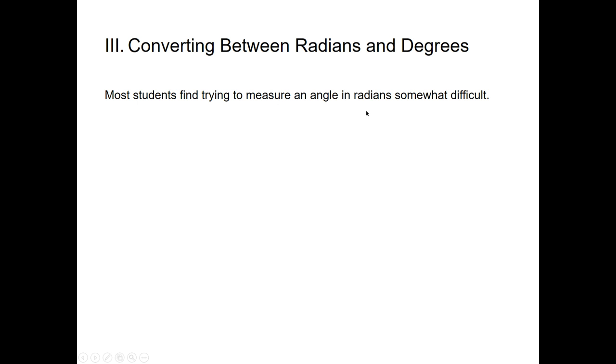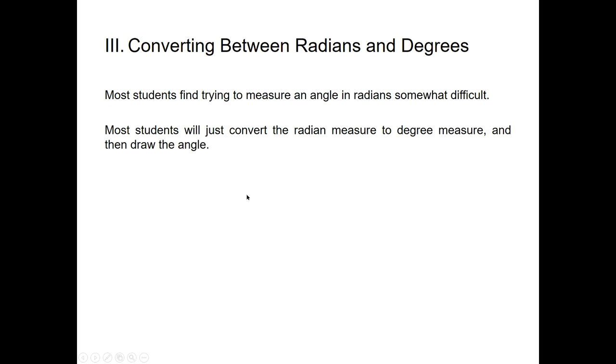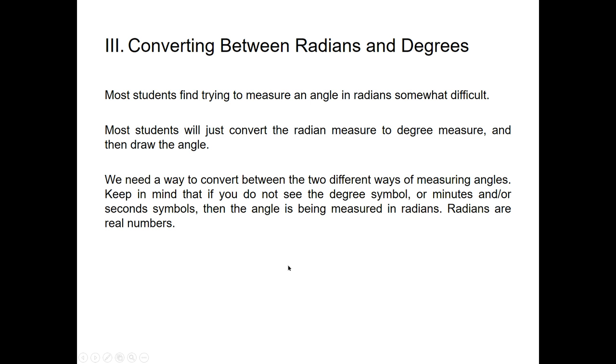Converting between radians and degrees: most students feel more comfortable with degrees, so they convert radians to degrees. Keep in mind that without the degree symbol (or minutes/seconds symbols), the angle is in radians. The key relationship: since 2π radians equals 360 degrees, dividing by 2 gives π radians equals 180 degrees. This is our conversion factor.